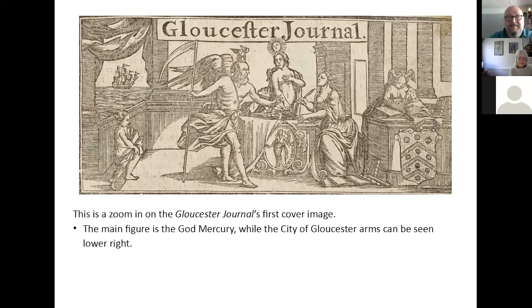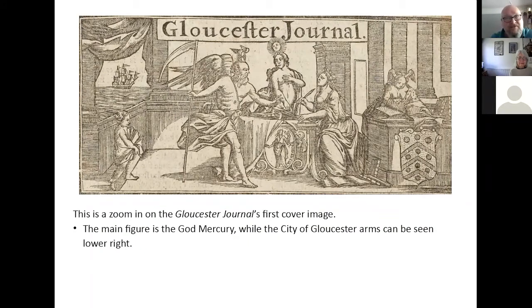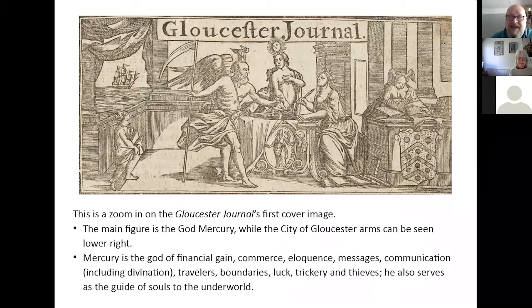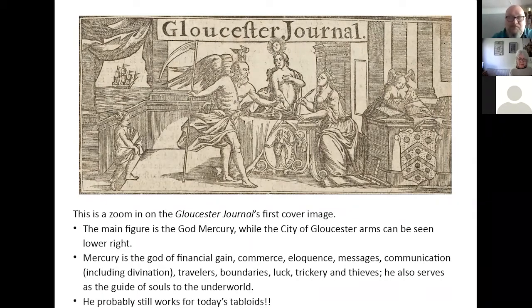There's a zoom on the first front cover. The main figure is the god Mercury, and you can see the City of Gloucester arms on the lower right. You've got various nymphs writing for Mercury, a nymph bringing more news, and a ship coming into sail obviously bringing news. Mercury is the god of financial gain, commerce, eloquence, messages, communication, divination, travellers, boundaries, luck, trickery and thieves, and he serves as a guide to the souls of the underworld. He probably still works for the tabloids today.